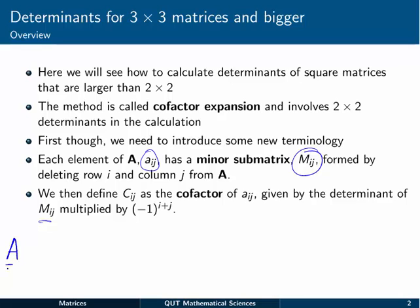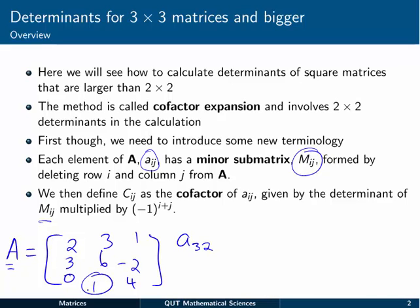So just as a quick example, say we had a matrix A equal to 2, 3, 0, 3, 6, 1, and 1, minus 2, 4. We could talk about element A32. You can see that down here is the third row, second column, so that's this 1. A32 is equal to 1.